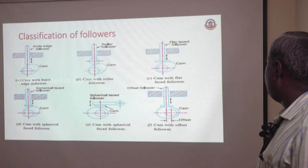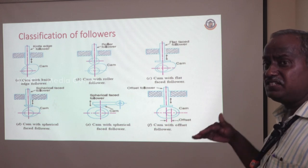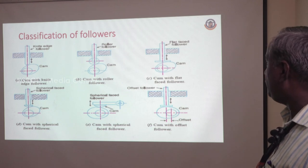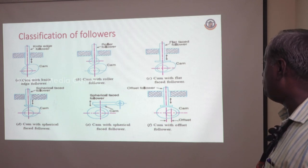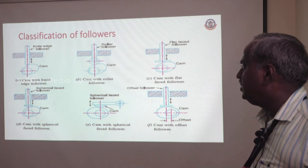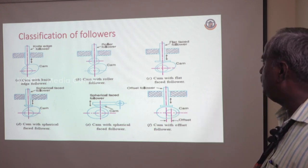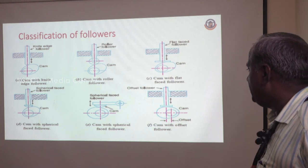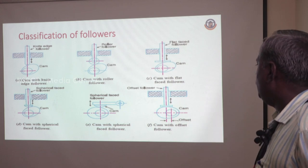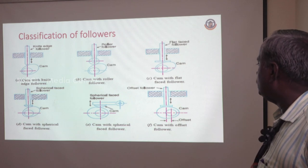The third one is the CAM with the flat-faced follower, where the surface contact between the CAM and follower is flat — that is why it is called flat-faced, otherwise it is called the mushroom type of follower. The fourth one is the spherical-faced follower, where the contact area between the CAM and follower is spherical-shaped, that is why it is called spherical. In diagram D, you will have reciprocating motion, and in diagram E, you will have oscillating type of motion.